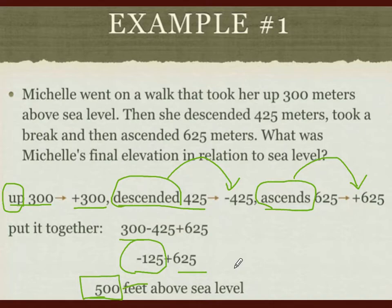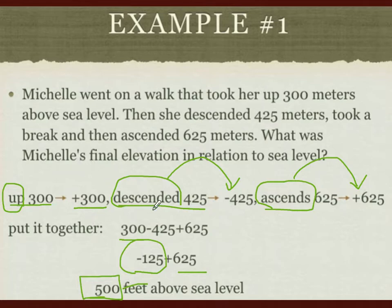If you look at the given, she ascended more than she descended. The 625 going up versus the 425 going down — going up is even more. And if you add the 300 meters more going up, it makes sense. Let's proceed to our second example.